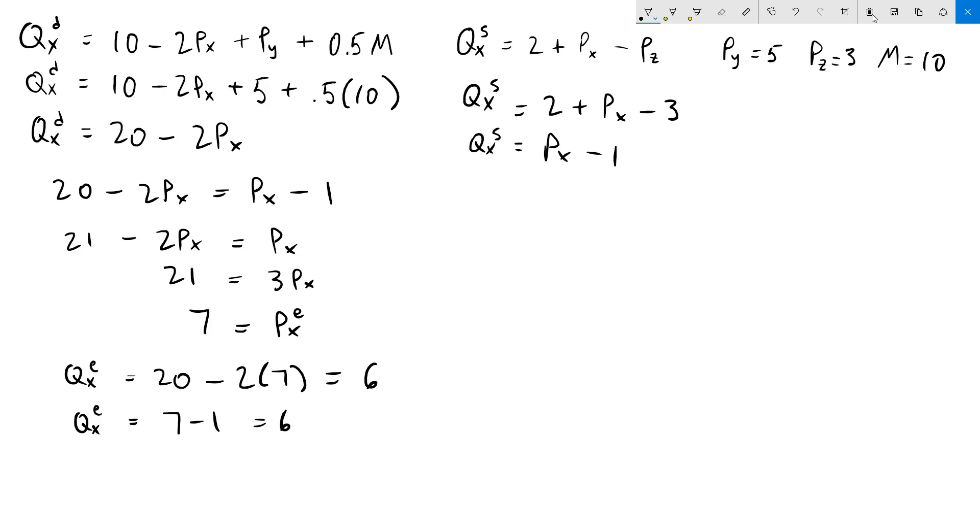The next thing we'll do is draw a graph of this market. Label my price and quantity axes. Let's draw the demand function first. The easiest way to do this is to simply figure out what the intercepts for our demand function are. For the intercept on the price axis, we know that quantity is 0.